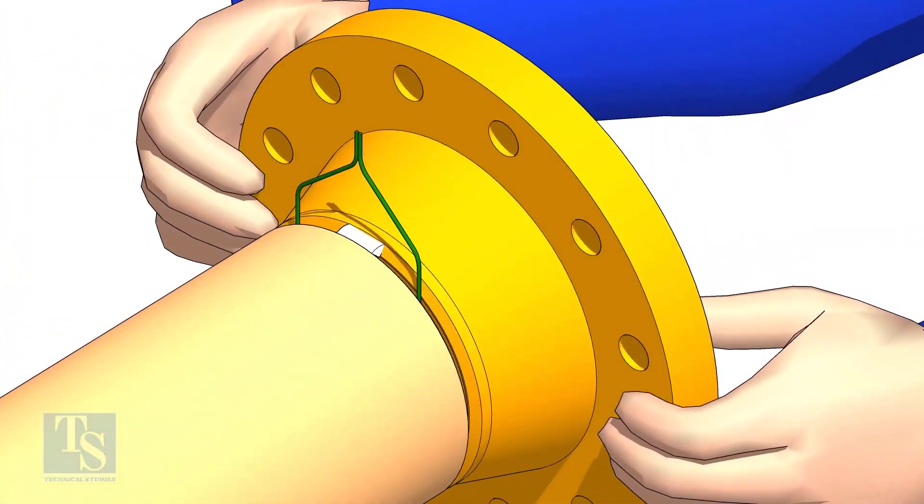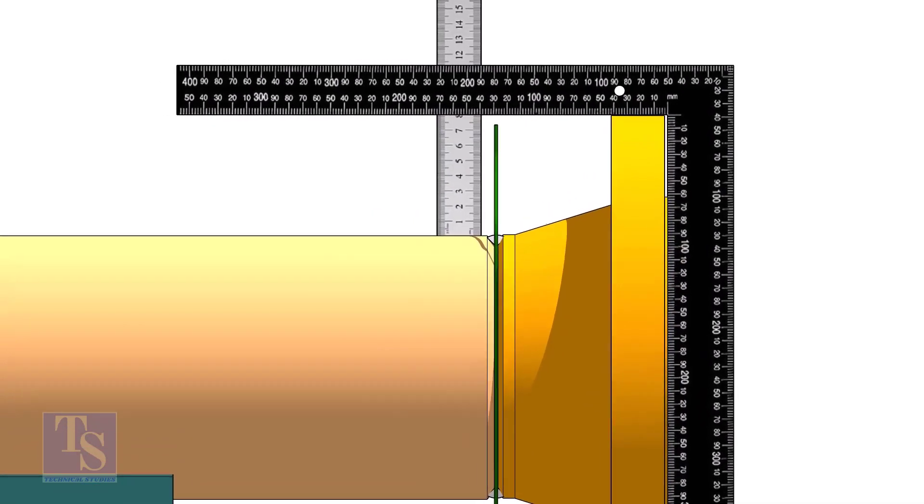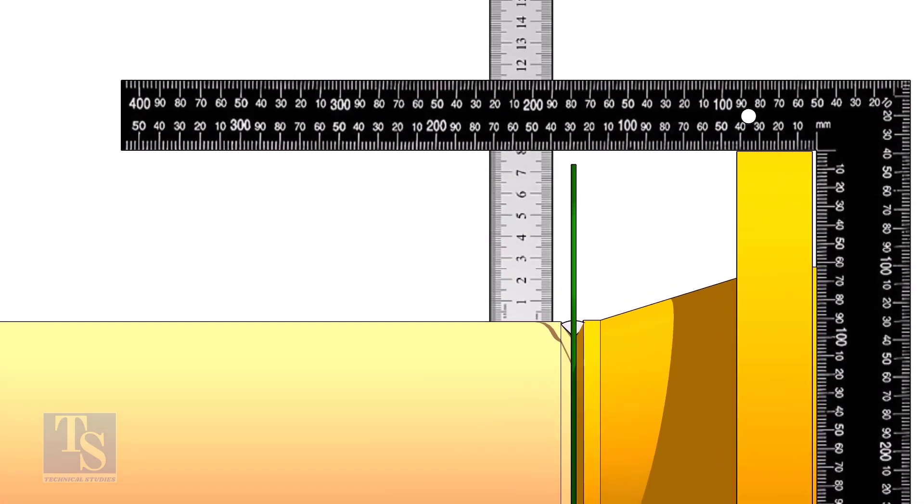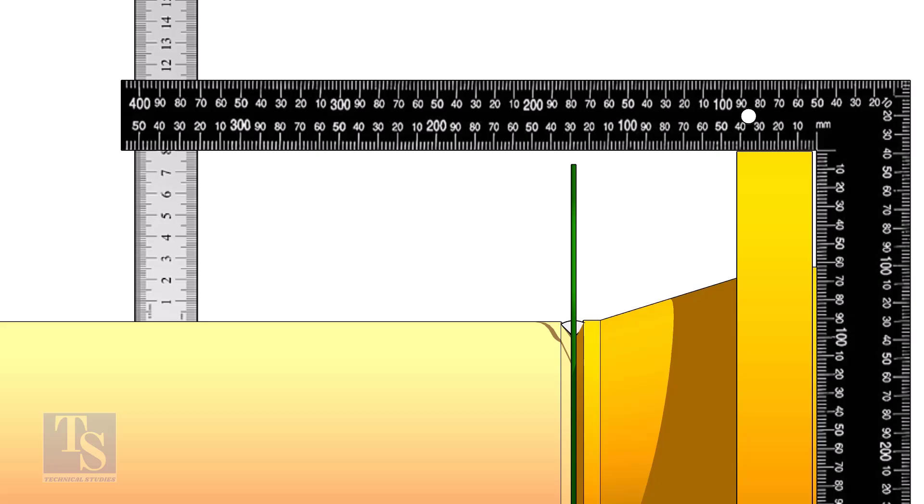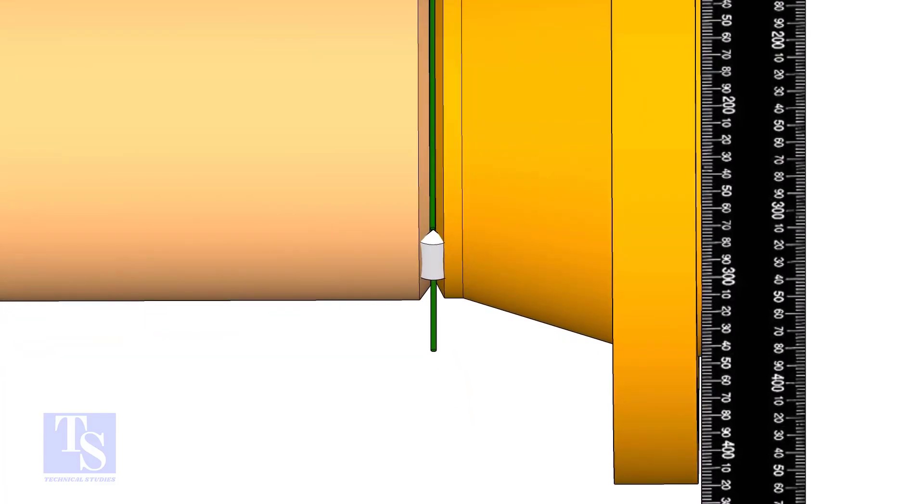Hold the flange with a gap rod in the joint, tack weld on top side of the joint. Check the squareness of flange face to the pipe as shown. Tack weld at the bottom side of the joint.